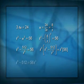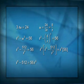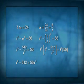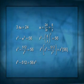So when I do that, I get T cubed times T cubed is T to the sixth. I get T cubed times minus 512 over T cubed is just minus 512. And on the right side, I get 56 T cubed.